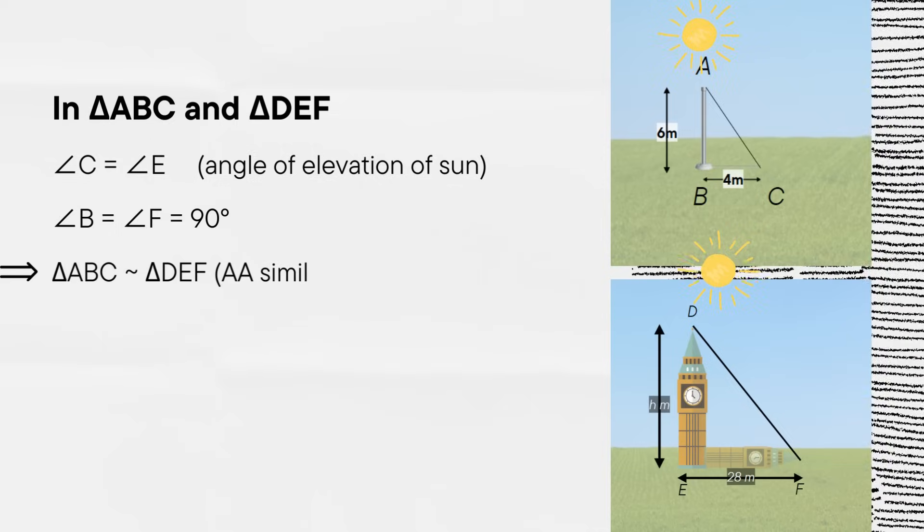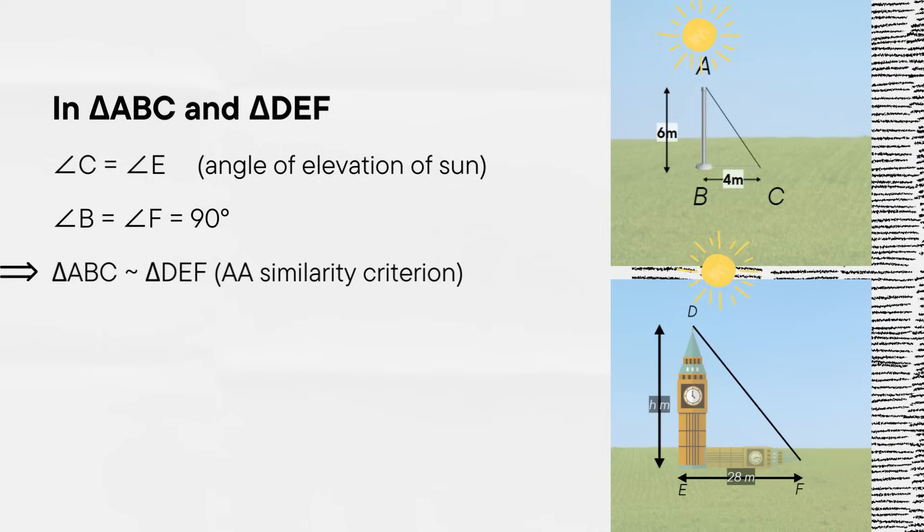Therefore, triangle ABC is similar to triangle DEF via AA similarity criterion.